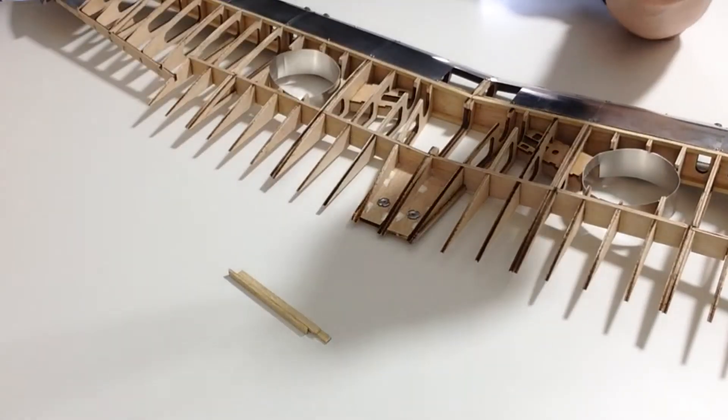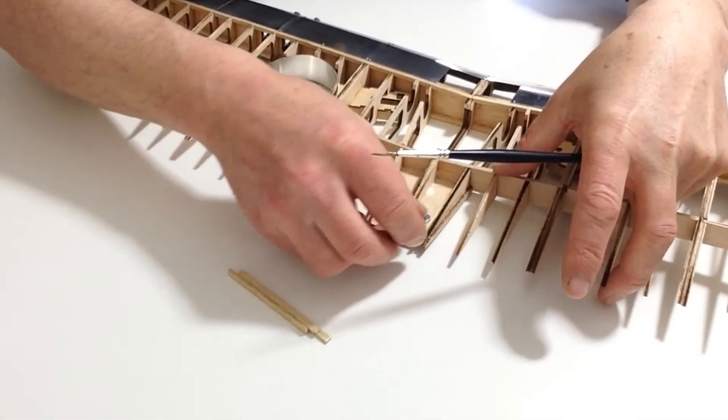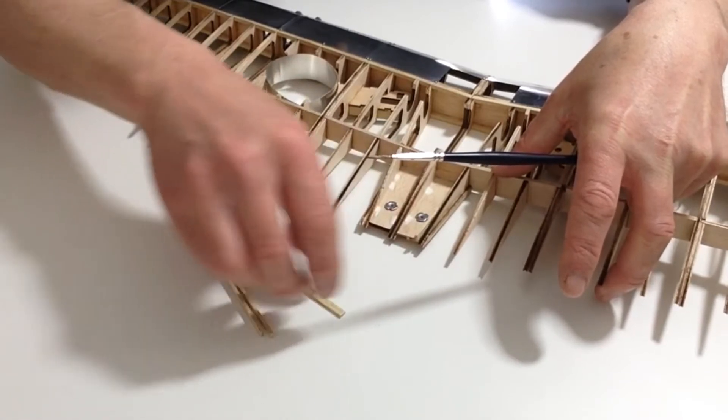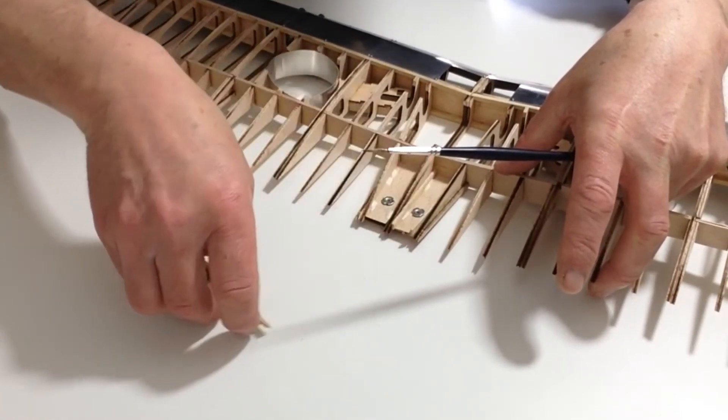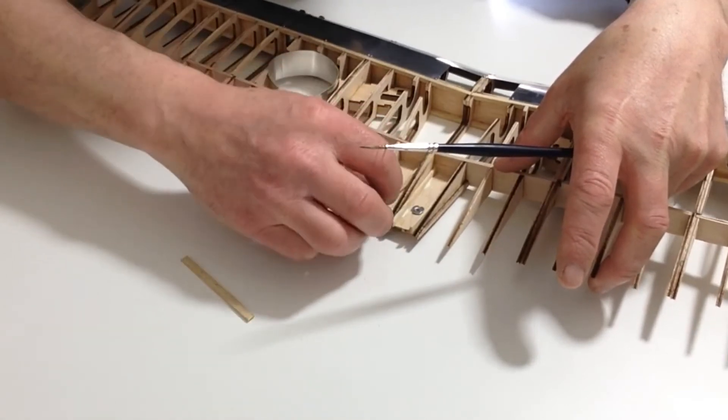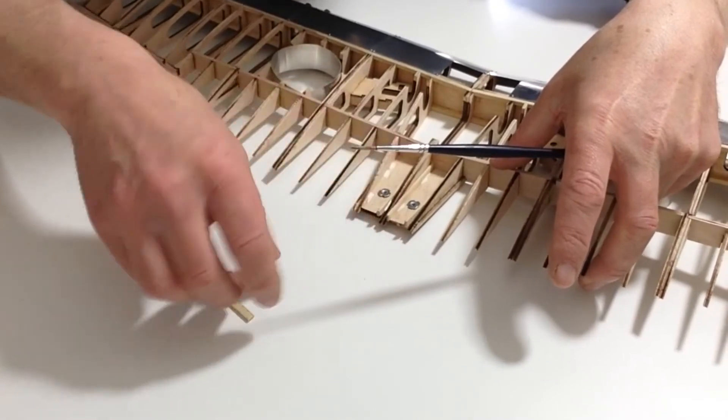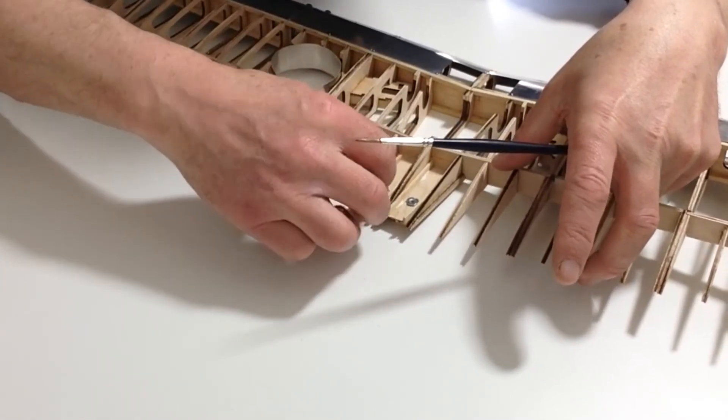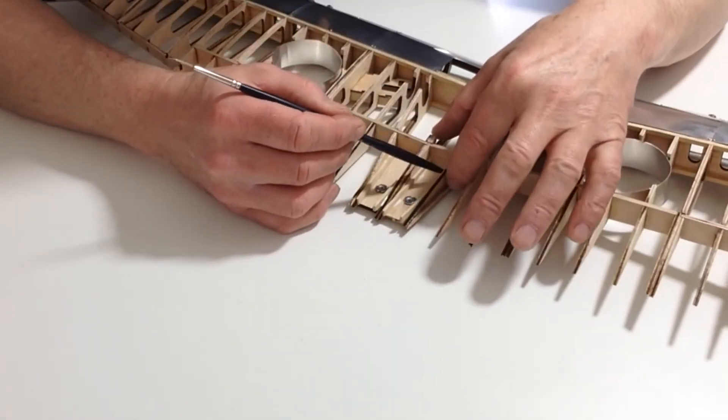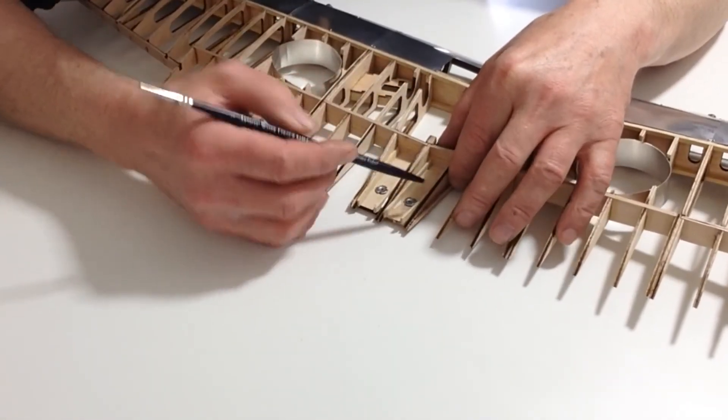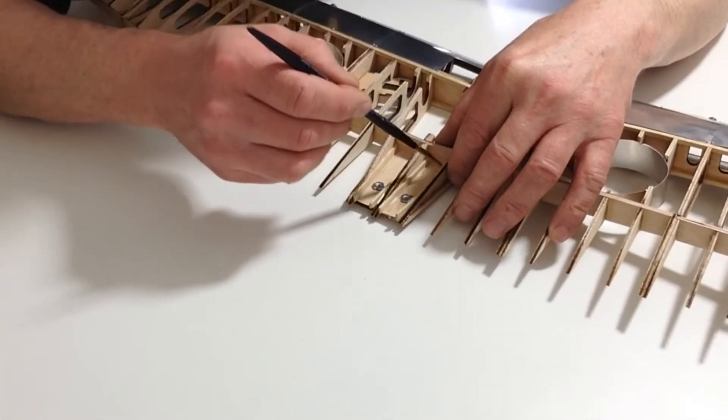Take your strips of 2x4 wood and place them on the inside of the runners, pushing them down gently into position. Clean up any excess glue.